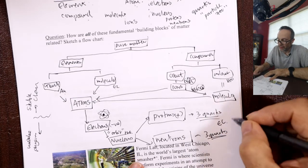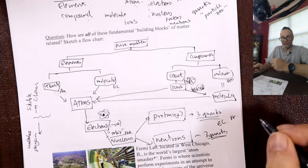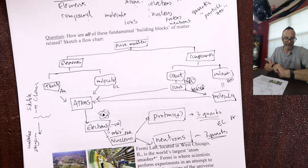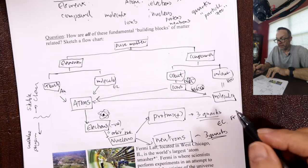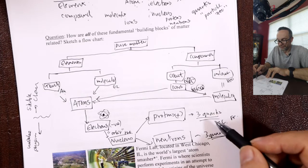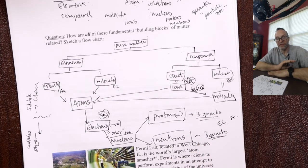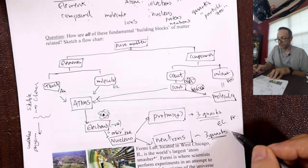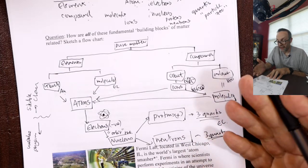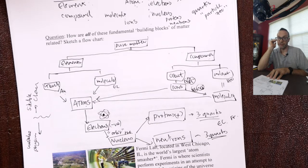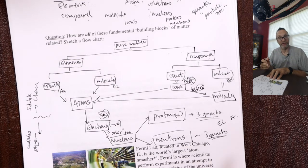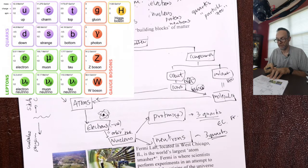For extra credit, email me by Friday: what three quarks make up a proton? There are 17 fundamental indivisible particles in nature — it's called the standard model. I'll put a picture of it in the video for you.